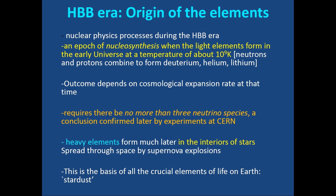Light elements — hydrogen, deuterium, helium, and lithium — existed in the very early universe; no heavier elements did. Heavier elements had to form much later through nuclear processes in stellar interiors and then be spread through space by supernova explosions. This is the basis of all crucial elements of life on Earth, giving rise to the phrase: we are all made of stardust.